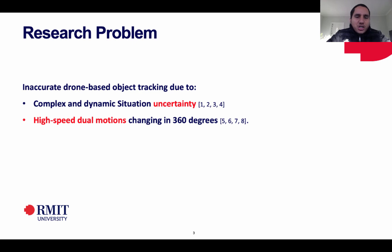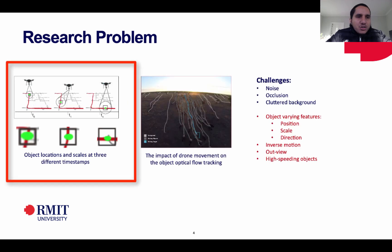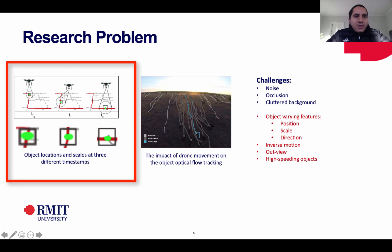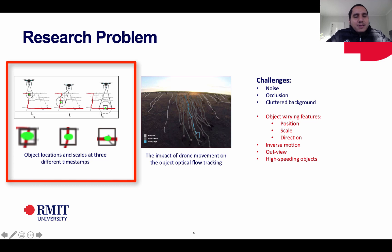All these factors are changing across six degrees of freedom. We have a drone tracking the object — I'm enlarging three timestamps here. At the first timestamp, the given bounding box exactly surrounds the object. But if the drone moves away from the object, moving higher or at a different angle, we can see different varieties of scale of the object itself.